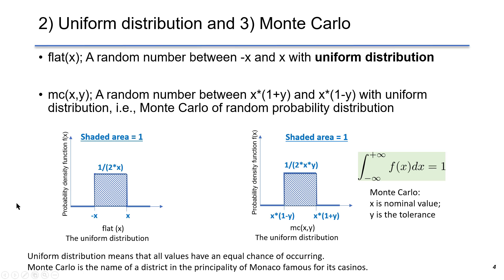The second one is the uniform distribution. The syntax is flat of x, which gives a random number between minus x and x. Uniform distribution means that all values have an equal chance of occurring. So they have the same probability density function, which is 1 over 2x, because the shaded area is 1.